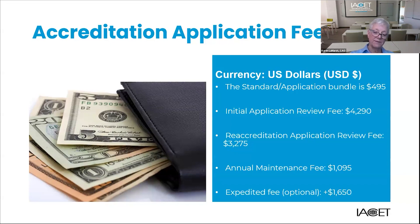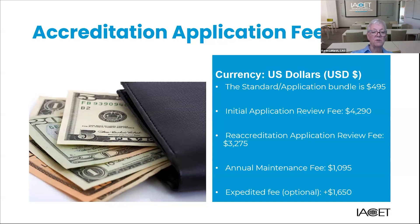The expedited option cuts a day or two off your preview and a week off of each review cycle. The application review fee includes the staff preview, the initial and second document review of the materials you'll provide by two IACET commissioners, and then the accreditation interview, which will be a meeting with one of your assigned commissioners via Zoom. If a third review is required, there is an additional review fee of $450 for that final review.